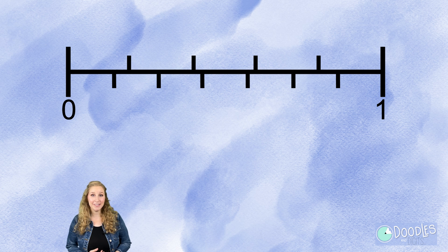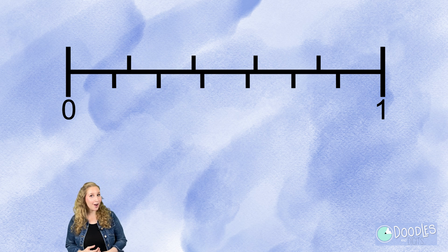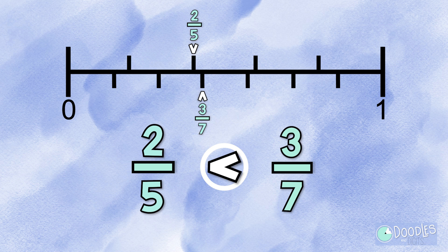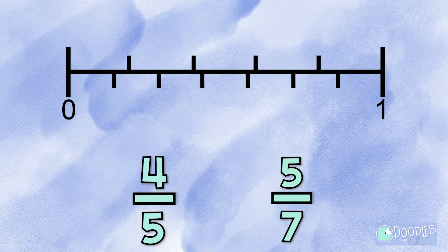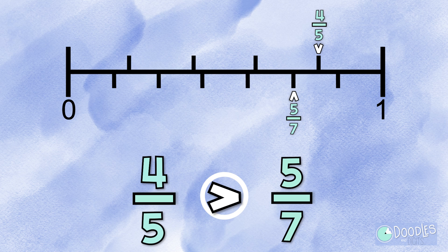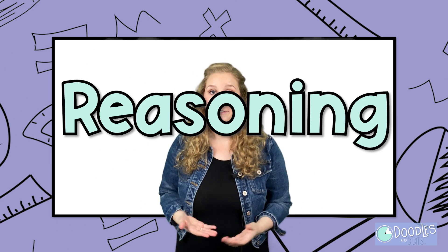Now that we've tried a few together, let's see if you can compare a few fractions using a number line on your own. Two-fifths and three-sevenths: two-fifths is less than three-sevenths. Four-fifths and five-sevenths: four-fifths is greater than five-sevenths.